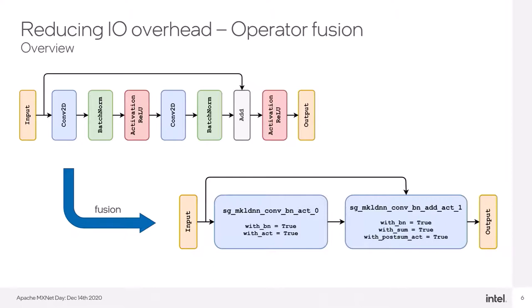Batch normalization during inference is mostly used as a simple affine transformation, thus we can merge it with convolution by adjusting the weights and biases accordingly. As you can see on the slide, also element-wise addition can be folded into convolution kernel by adding the result of convolution to the output tensor instead of overriding it.